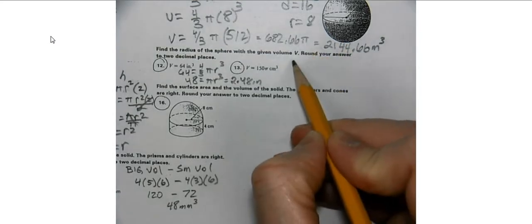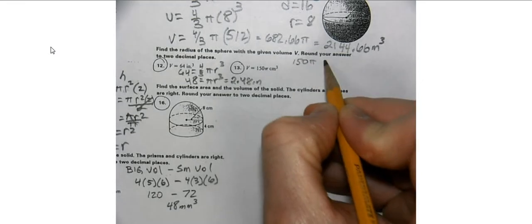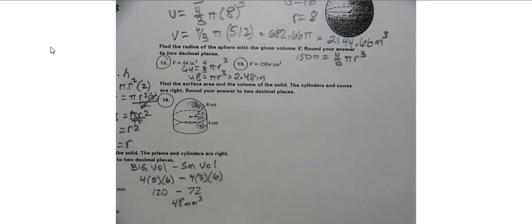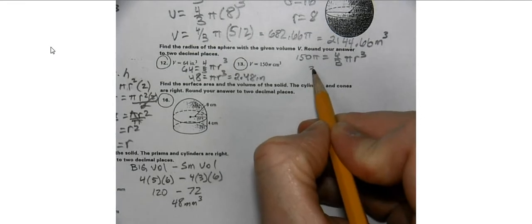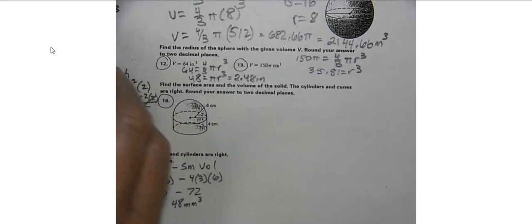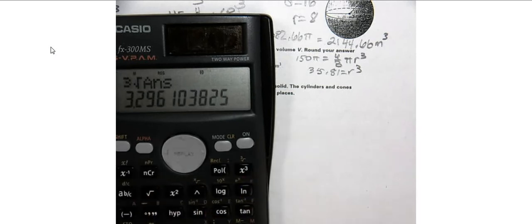Next, we have 150 pi equals 4/3 pi r cubed. We multiply by 3, divide by 4, and divide by pi to get 35.81 equals r cubed. Taking the cube root gives r equals approximately 3.3.